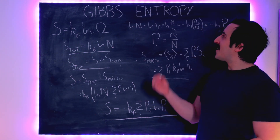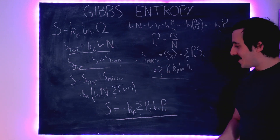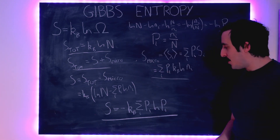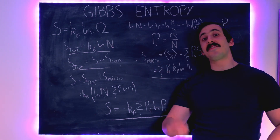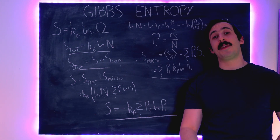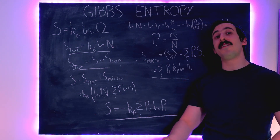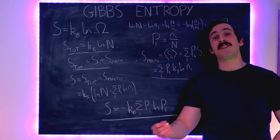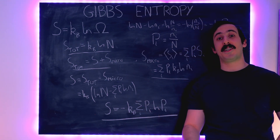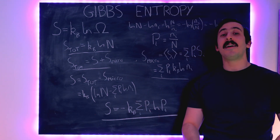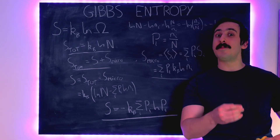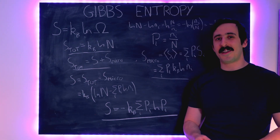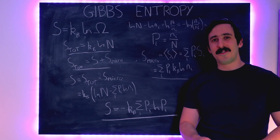So there you have the Gibbs formulation of entropy. I hope you enjoyed that. In the next video, we are going to look at the Shannon entropy and how we can arrive at an information content definition of entropy, which also relates to the Maxwell's demon episode we saw in the last video. Look forward to seeing you then.